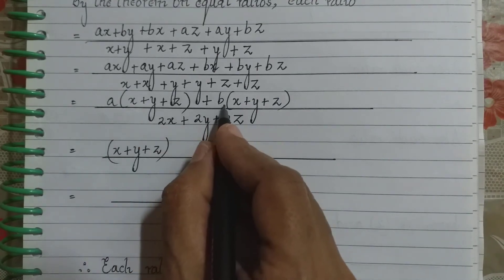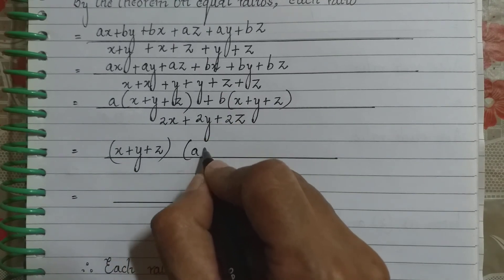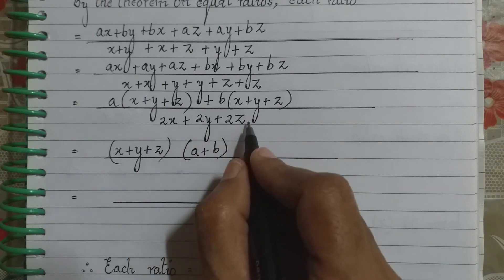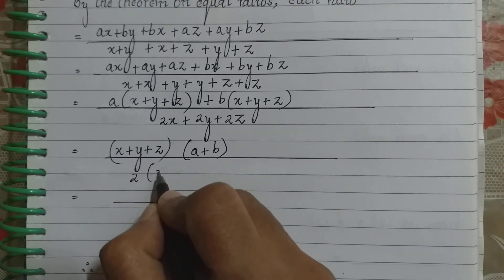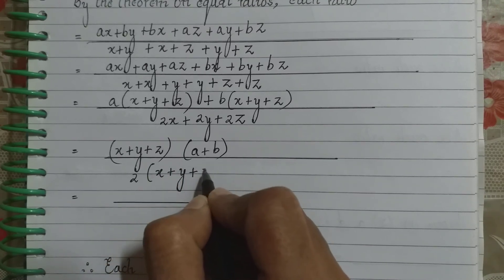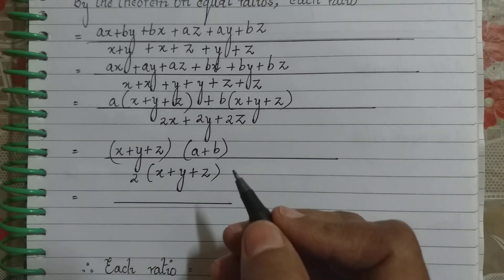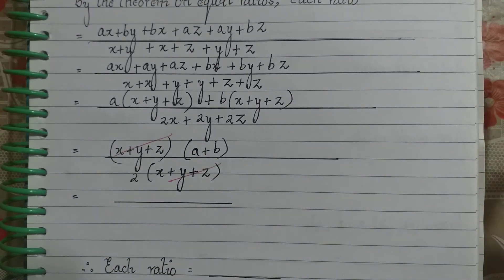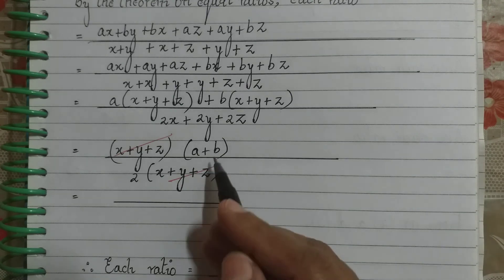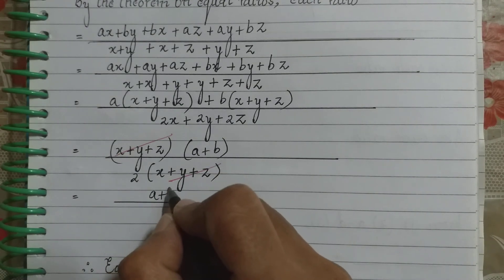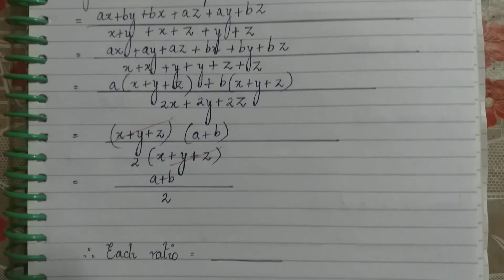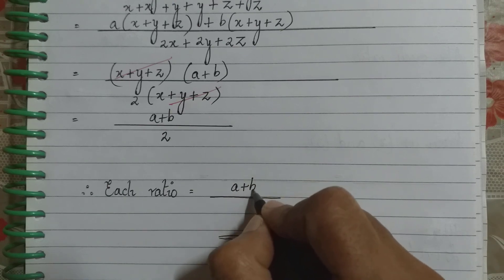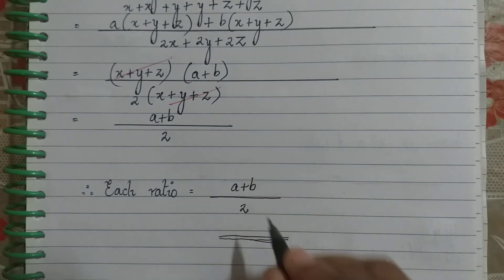Taking A common from the A terms gives A(X + Y + Z), and taking B common from the B terms gives B(X + Y + Z). In the denominator, 2X + 2Y + 2Z = 2(X + Y + Z). The (X + Y + Z) in the numerator and denominator cancel, leaving (A + B)/2. Therefore, each ratio is equal to (A + B)/2.